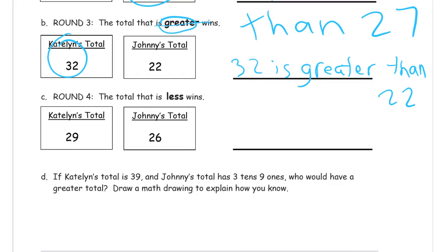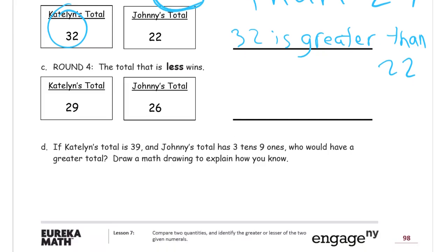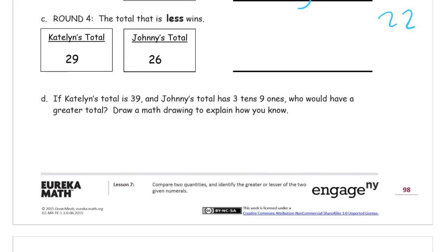Now the words you need to spell, greater than or less than, if you don't know how to spell them they're right here in bold print. So you really should spell them correctly because they're right there so you can copy them. And round four the total that is less wins, so Johnny's going to win that one. I'm going to circle Johnny because 26 is less than 29. I'm going to write that down. 26 is less than 29.